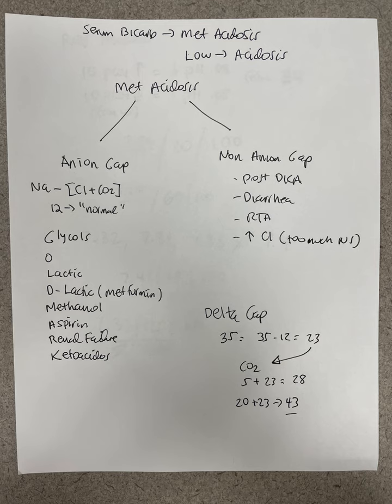Even if a patient has a very low ejection fraction — say 10% — that does not mean they're not dehydrated. If they've been having diarrhea for five days, even with an EF of 10%, if you put in a central line and the CVP says 6, for that patient that's low. Give them fluid and see if they're fluid responsive. Keep giving until they stop being fluid responsive or you notice their neck veins are getting bigger and they're getting more short of breath — then stop.